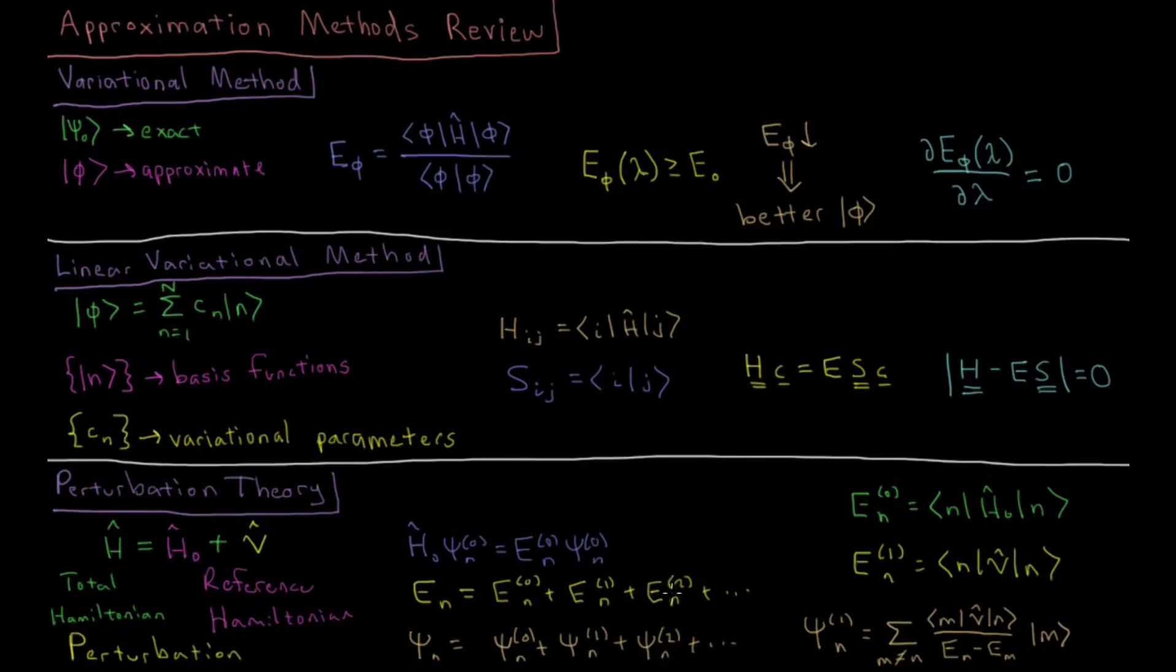And then successive energy corrections get more and more complicated beyond that. And then just to show that even for the first order wave function there is some numerical heavy lifting involved. We would have a sum over all of the eigenfunctions of the reference Hamiltonian of this integral of the perturbation and then a denominator which depends on the differences of energy levels.